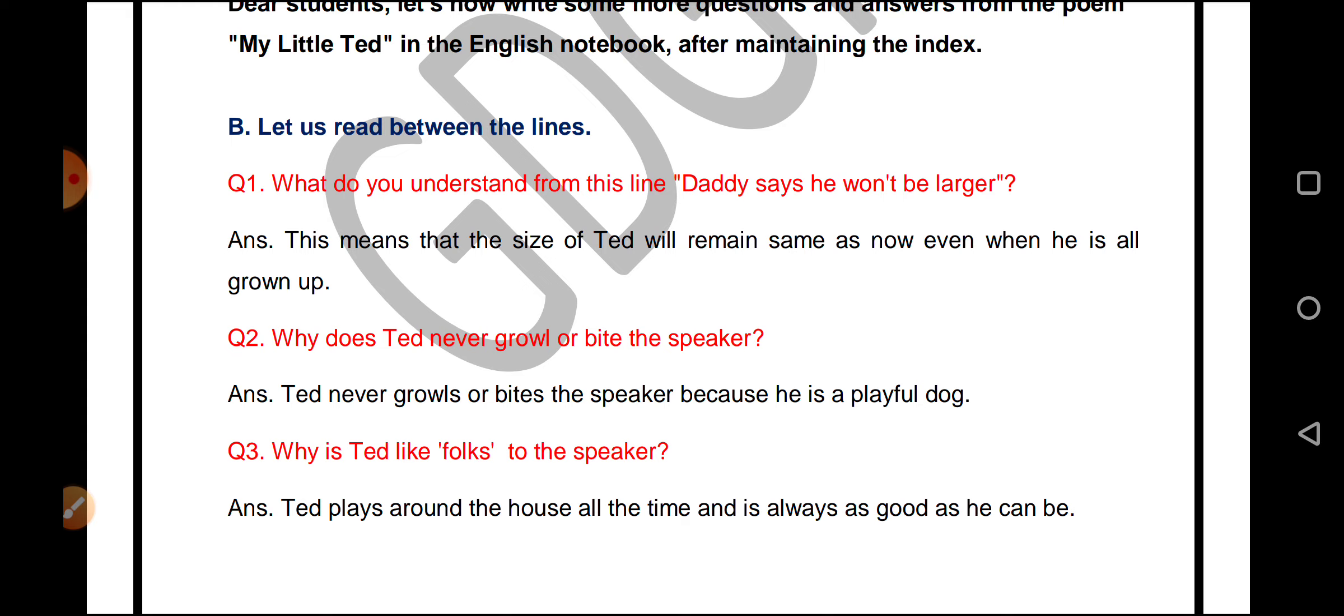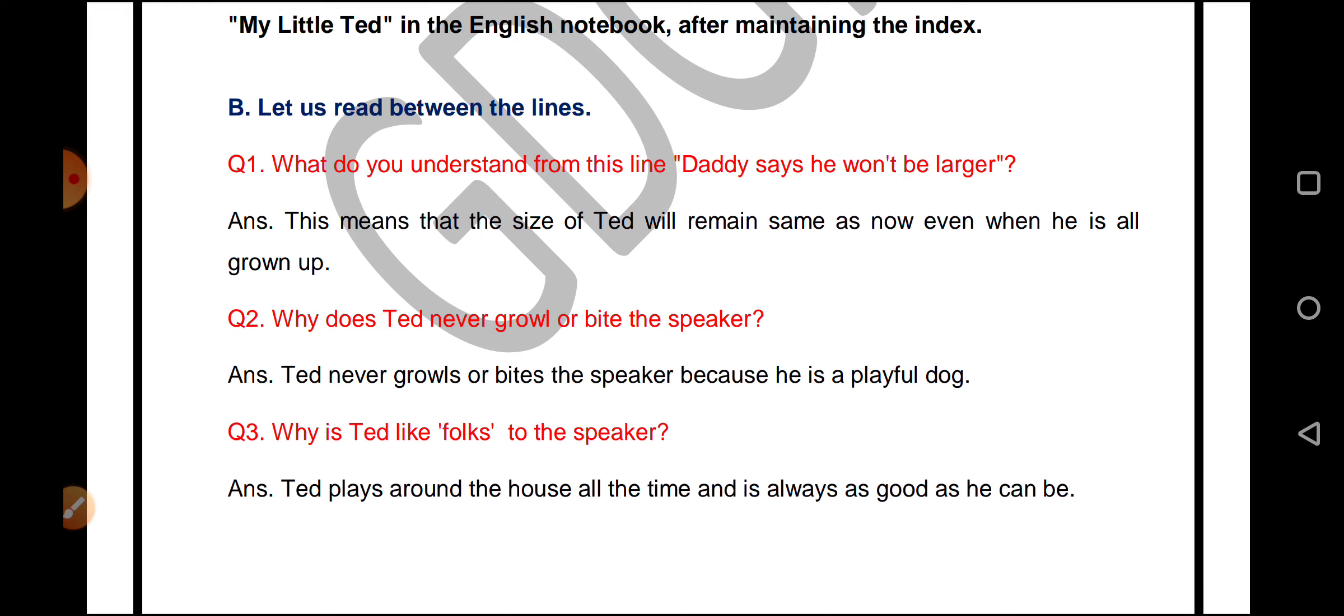Why is Ted like folks to the speaker? As we've discussed, Ted and the poet are really close to each other and like spending time together. Ted plays around the house all the time and is always as good as he can be. These things make the poet think that Ted is like family to them.